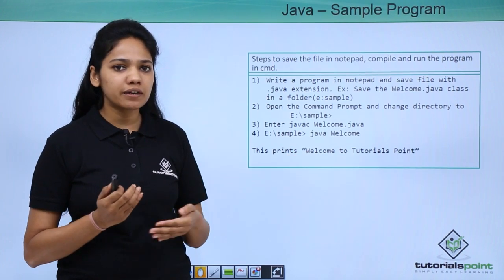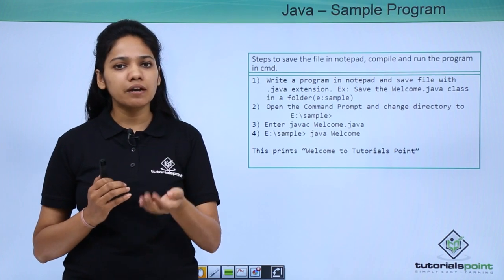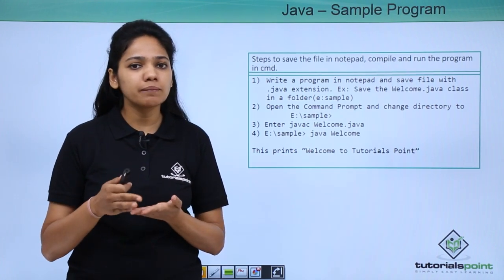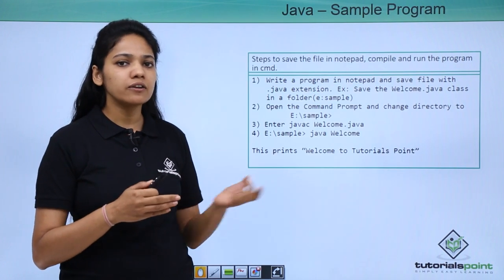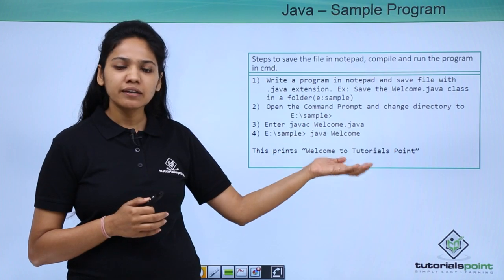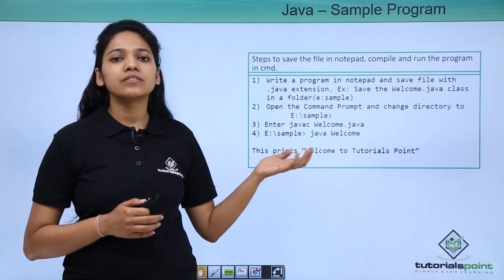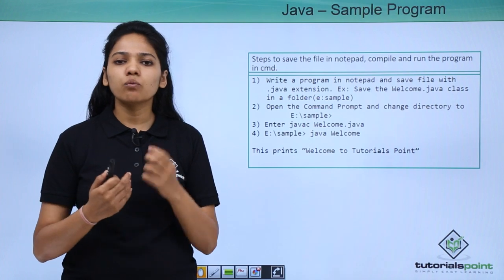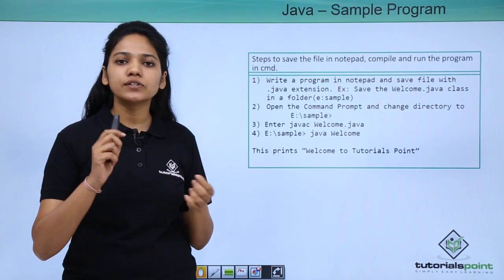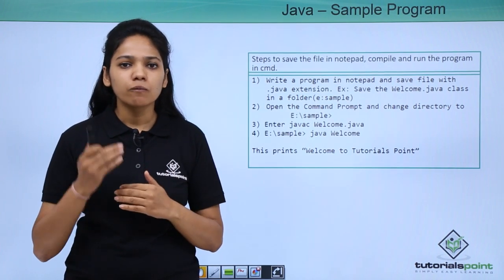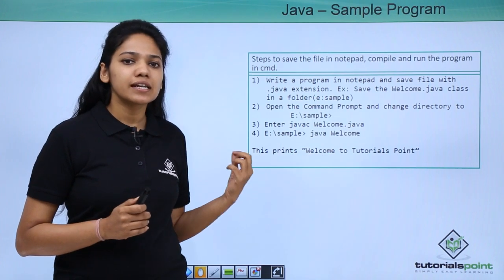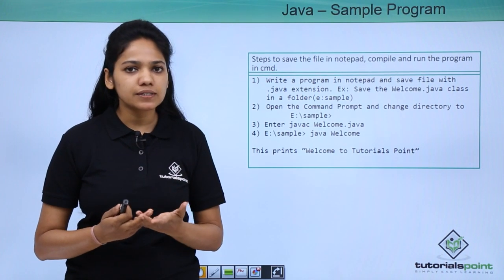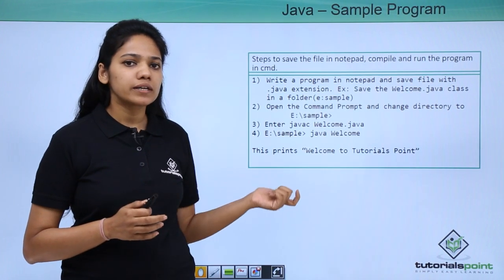To execute, you need to open the command prompt. Once you open it, navigate to the drive where your file is saved. To compile your program, provide the command javac followed by the class name with the .java extension. The compiler will compile Welcome.java and create a class file. You can go back to your folder to confirm the class file is created. Then run the command java followed by your file name to execute the program, and it will print the message Welcome to Tutorials Point.